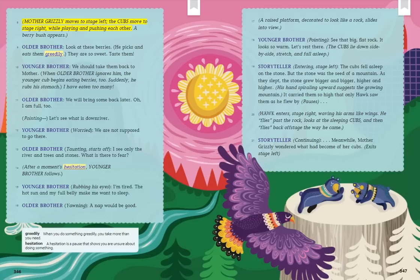Mother Grizzly moves to stage left. The cubs move to stage right while playing and pushing each other. A berry bush appears. Older Brother: Look at these berries. He picks and eats them greedily. They are so sweet. Taste them. Younger Brother: We should take them back to mother. When Older Brother ignores him, the younger cub begins eating berries too. Suddenly, he rubs his stomach: I have eaten too many. Older Brother: We will bring some back later. Oh, I am full too. Pointing: Let's see what is down river.